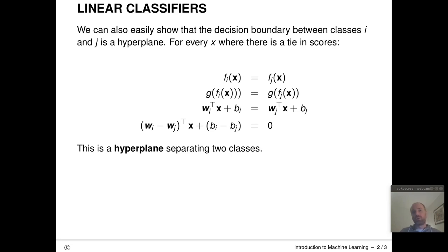We can now easily show that the decision boundary between two classes i and j is actually a mathematical formal hyperplane if we have a linear classifier.